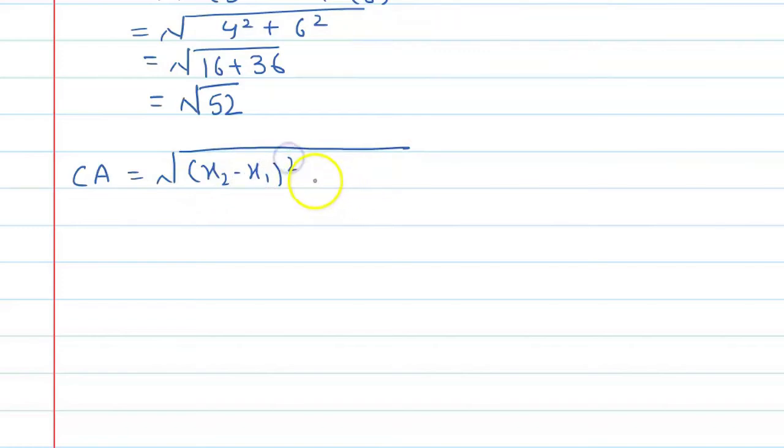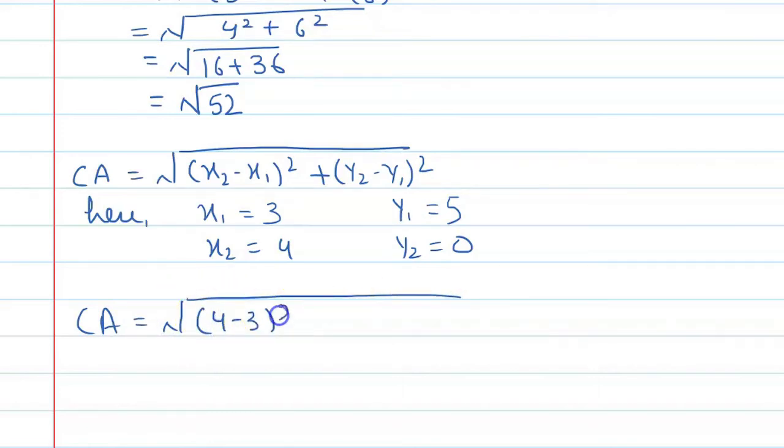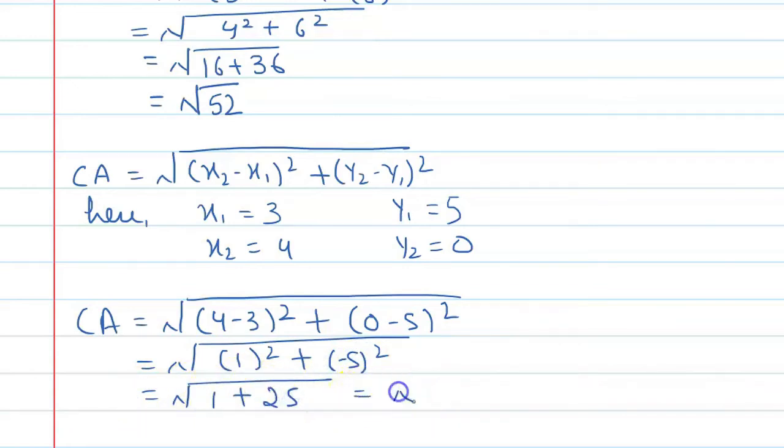Now CA equals square root of (x2-x1)² plus (y2-y1)². Here x1=3, x2=4, y1=5, and y2=0. So CA equals square root of (4-3)² plus (0-5)², which is 1² plus (-5)², equals square root of 1 plus 25, equals square root of 26.